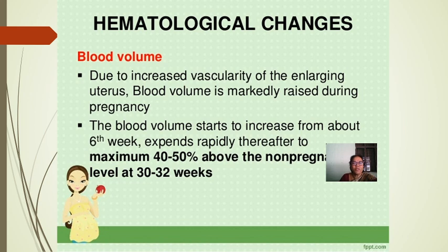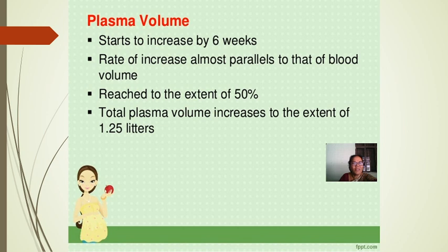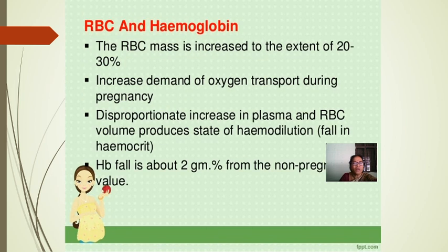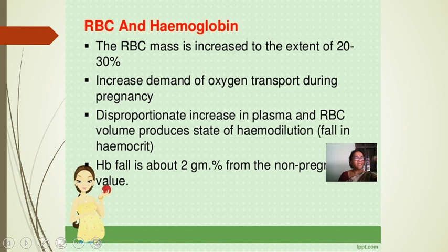Hematological changes: blood volume is markedly raised during pregnancy. Total blood volume starts increasing from about 6 weeks and expands rapidly to a maximum 40–50% above the non-pregnant level at about 30–32 weeks. Plasma volume starts increasing by 6 weeks, reaching 50% above normal — a total increase of 1.25 liters. RBC mass increases by 20–30%. This proportionate increase in plasma and RBC volume produces hemodilution, causing a fall in hematocrit, making iron supplementation essential. Hemoglobin falls about 2 g% from the non-pregnant value.